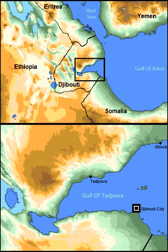In August 1840, the conclusion of a treaty of friendship and commerce between the Sultan Muhammad bin Mohammed of Tajura and Commander Robert Moresby of the Indian Navy transferred the sale of Musha Island to Great Britain for ten sacks of rice. In 1887, Britain ceded sovereignty of the island to France, at the same time recognising the French sphere of influence in the Gulf of Tajura, in exchange for the abandonment by France of any right in Zila and the neighbouring islands.